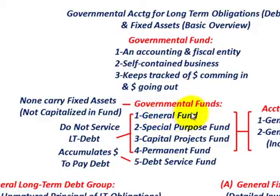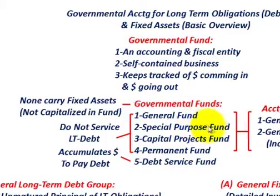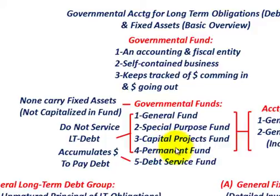The general fund covers the day-to-day operations for the governmental body, like the city or municipality. Then you'd have a special purpose fund, where you might keep track of highway dollars or some special purpose for the municipality. Then there's a capital projects fund, where you keep track of construction of some project for the municipality or governmental unit. And then you'd have a permanent fund, where investment dollars are set aside and you can only use the interest those investments generate for the governmental body.